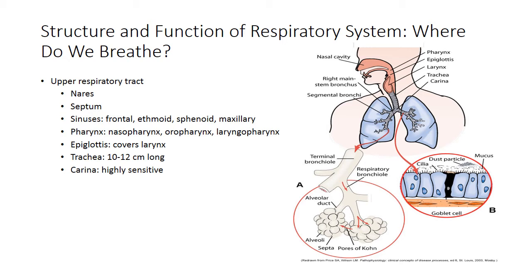The trachea lies below the epiglottis and is a 10 to 12 centimeter long tubular structure. As you can see, the trachea is covered with cartilage, making it a firm and very strong structure. At the bottom of the trachea, the right and left main stem bronchi separate or bifurcate, and that sensitive area straight down the trachea where the two separate is called the carina. This is a very sensitive area, so if we were to suction a patient via nasotracheal suction or through a tracheostomy tube and stick the catheter down, we will stimulate the carina and the patient will cough.